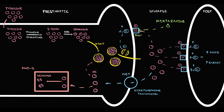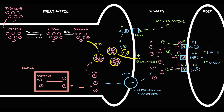With alpha-2 blocked, norepinephrine cannot bind to the autoreceptor, so the receptor cannot be activated. Without alpha-2 activation, reciprocal inhibition becomes impossible, and without reciprocal inhibition, exocytosis of norepinephrine into the synapse increases. From this moment, step by step, norepinephrine molecules begin to accumulate in the synapse. In the synapse, norepinephrine molecules bind to adrenergic receptors on the postsynaptic neuron, activating them. The higher the stimulation of adrenergic receptors, the greater the adrenergic effect, and thereby the better the mood and the more energy increases.